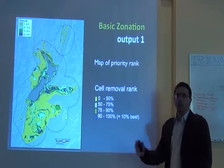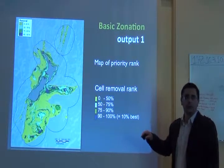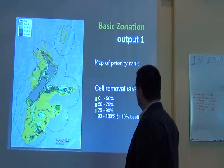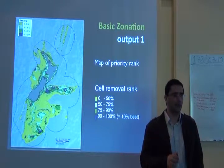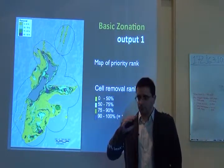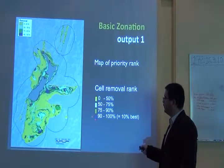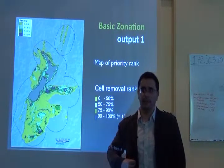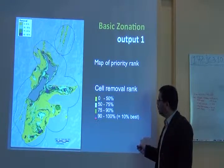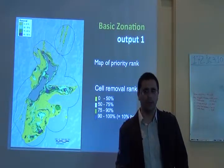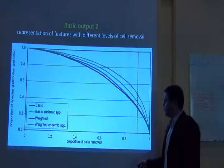What you get is a priority ranking for the whole surface you are trying to protect. It goes from cells that are less important in your planning up to the blue ones, which are the most important — the top 10% best cells of your area. If your target is to protect 10% of the whole system, you should invest your resources in those blue areas. If you want to protect about 25%, you should look at all the blue and green areas.